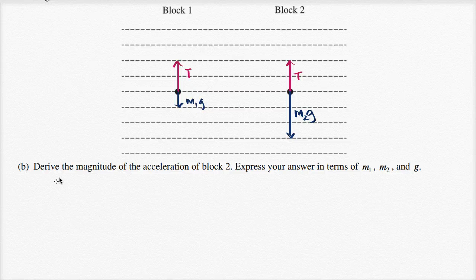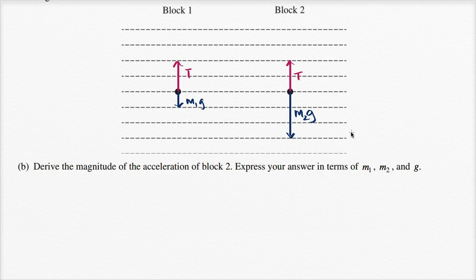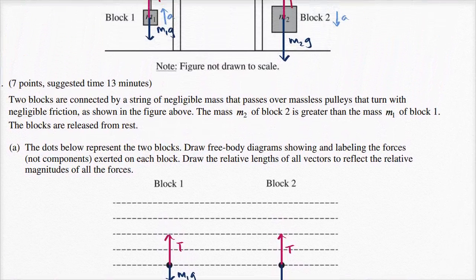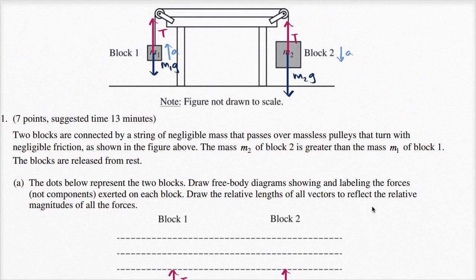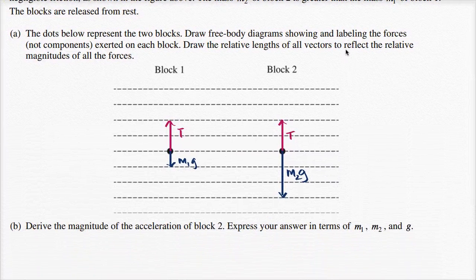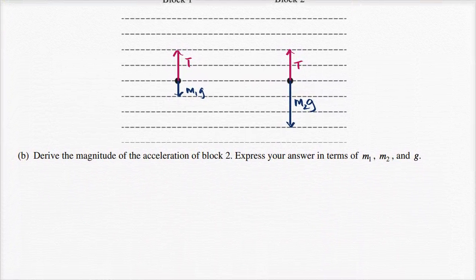Let's tackle part B now. Derive the magnitude of the acceleration of block two, and express your answer in terms of M1, M2, and G. Try to pause the video and see if you can work through it yourself. We already worked through part A based on this diagram above in a previous video. So now we're ready to do part B.